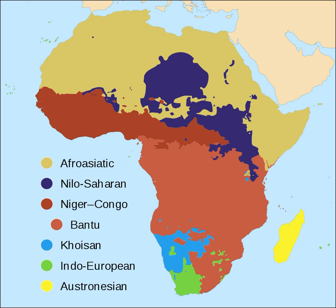The Afroasiatic homeland is uncertain. However, the family's most extensive branch, the Semitic languages — including Arabic, Amharic and Hebrew among others — seems to have developed in the Arabian Peninsula. The Semitic languages are now the only branch of Afroasiatic spoken outside Africa. Some of the most widely spoken Afroasiatic languages include Arabic, Somali, Berber, Hausa, Amharic and Oromo. Of the world's surviving language families, Afroasiatic has the longest written history, as both the Akkadian language of Mesopotamia and Ancient Egyptian are members.